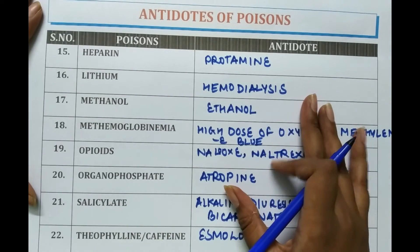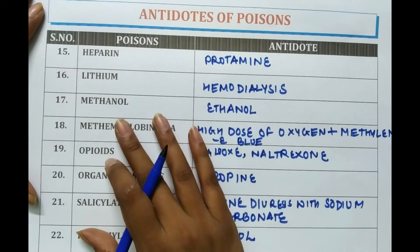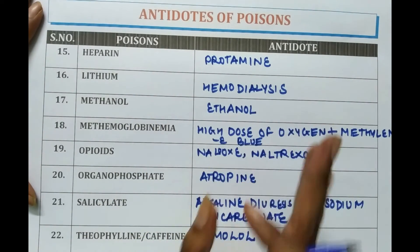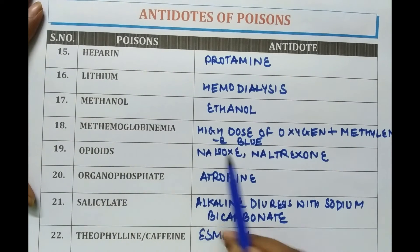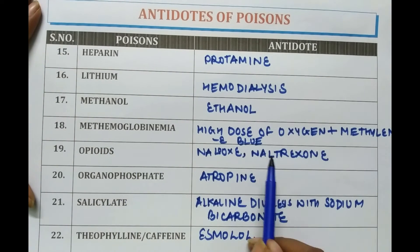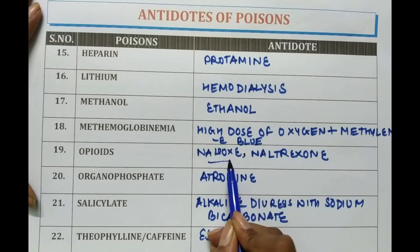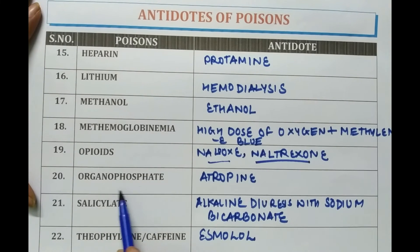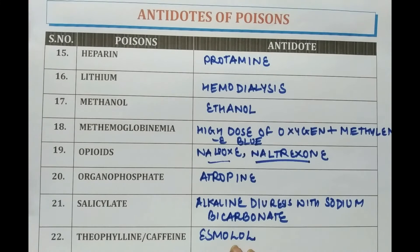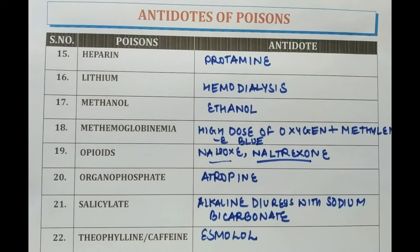To revise: For lithium, hemodialysis is suggested. For methanol, ethanol is given. In methemoglobinemia, high dose of oxygen and methylene blue is suggested. For opioid poisoning, naloxone or naltrexone is given. For organophosphate poisoning, atropine is provided. For salicylate poisoning, alkaline diuresis with sodium bicarbonate is given. For theophylline or caffeine, esmolol is suggested.